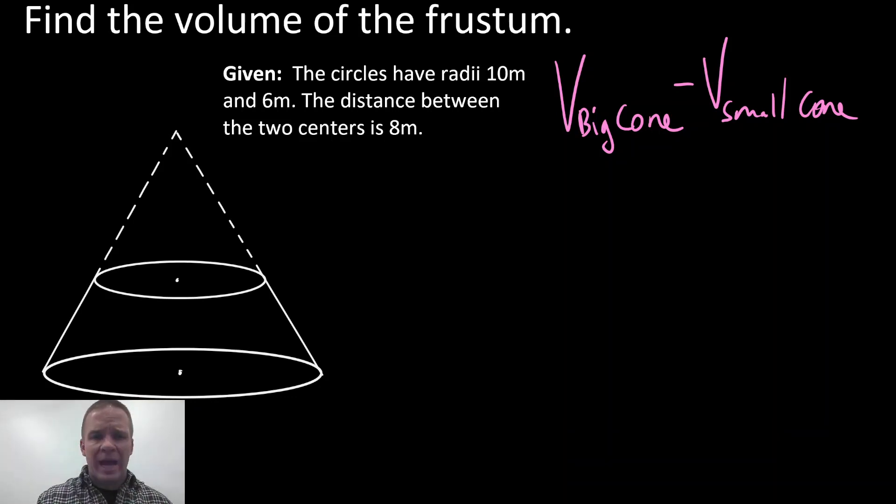What kind of information do we have here? I've got a radius of the big cone is 10 meters. The radius of the small cone is 6 meters. And I know that the distance between the two centers is 8 meters. Well, I need the height of both the big cone and the small cone in order to figure this thing out. I don't have either. How the heck am I going to get that?